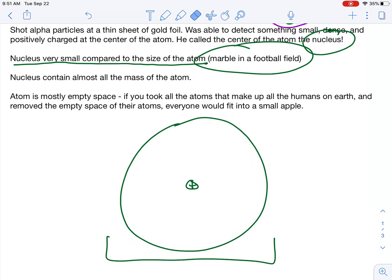He said that the nucleus contains almost all the mass of the atom. And that's correct. In the nucleus, you have protons and neutrons. We know that now. He did not know that. And that's where most of the mass of the atom is located. And then it said the atom is mostly empty space. If you took all the atoms that make up all the humans on Earth and removed the empty space, everyone would fit into a small apple. So most of everything is nothing. Kind of crazy.